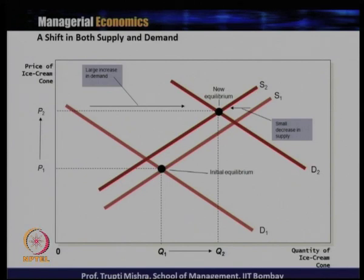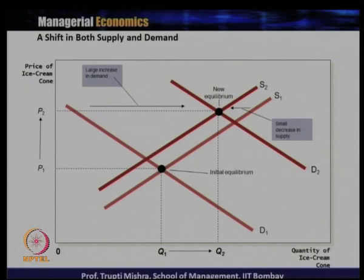When there is a change in demand, the demand curve moves from D1 to D2, and when there is a change in supply, there is a movement from S1 to S2. In this case, there is an increase in demand that leads the demand curve from D1 to D2, and there is a decrease in supply that leads the supply curve from S1 to S2.